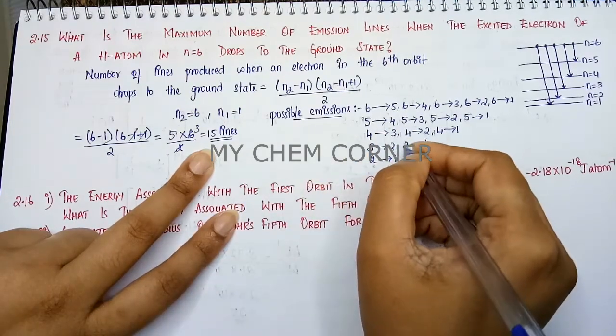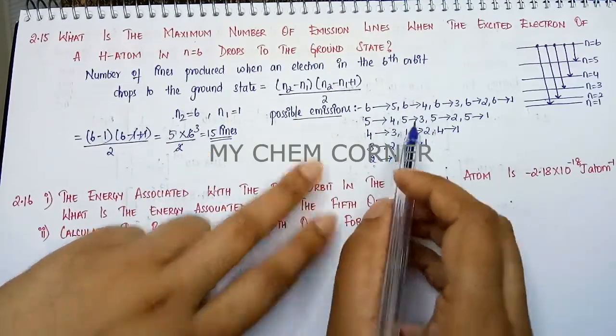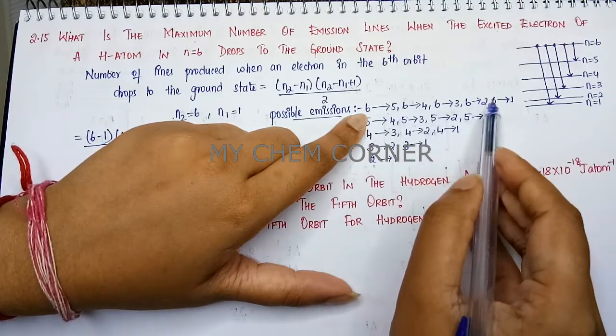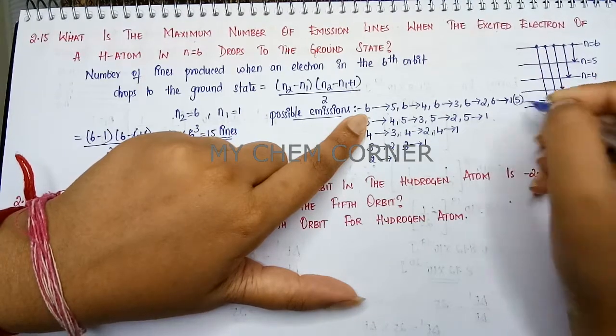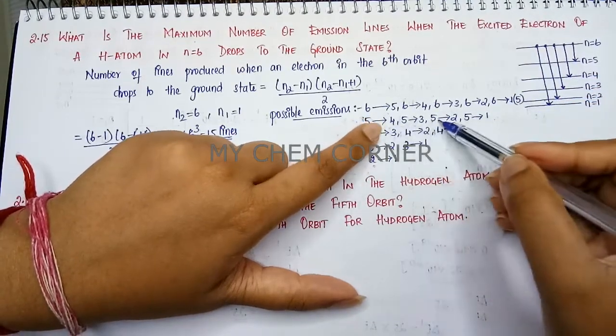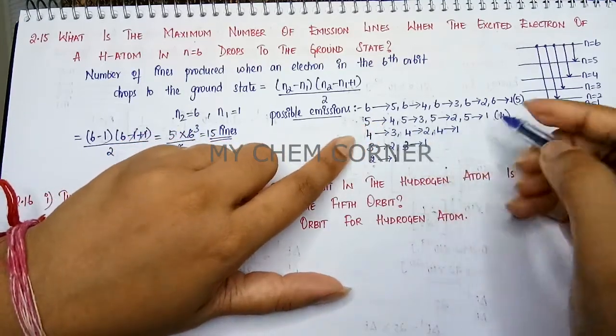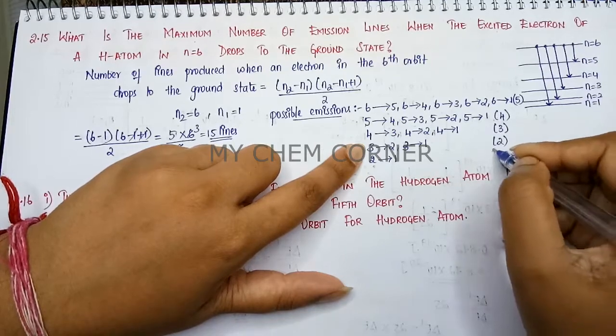So here when we are telling these possible transitions, if you see when it is from 6 you have 1, 2, 3, 4, 5. So here I have 5 transitions. Here 1, 2, 3, 4—I have 4. Here 1, 2, 3—that's 3. Here there are 2, and here there is 1.